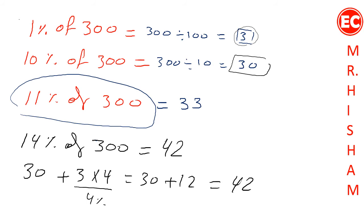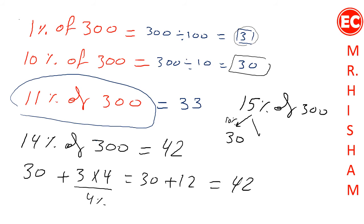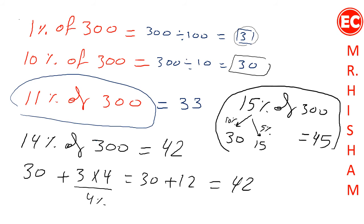To find 15% of 300: 10% is 30, and 5% is half of 30 which is 15. So 15% of 300 is 30 plus 15, which equals 45. This is how to simplify finding 11%, 14%, and 15% of a large number.